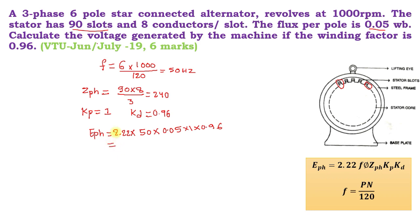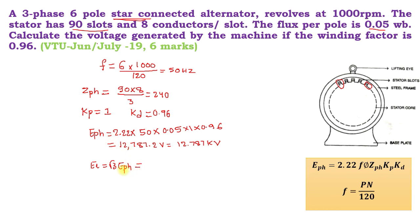The answer of this equation is 12,787.2 volts, which can be converted to 12.787 kV. Now we calculate the line voltage. The relation between line and phase voltage is EL = √3 × EPH, because the stator is star connected. In a star connection, EL = √3 × EPH.